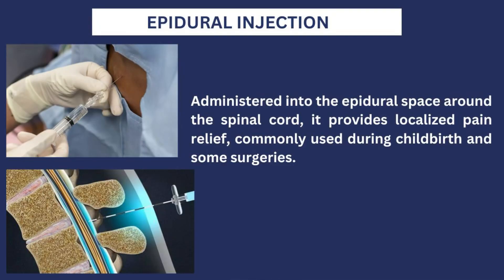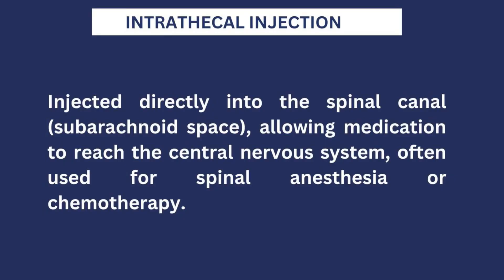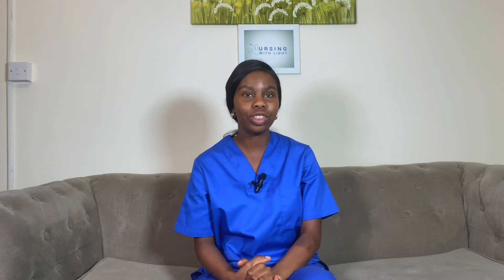The next one is the epidural, which is commonly used in maternity as well as surgical procedures. The epidural injection is administered into the epidural space around the spinal cord and helps to provide localized pain relief during childbirth and surgeries. Next is the intrathecal injection, which is given directly into the spinal canal — the subarachnoid space — allowing a healthcare professional to distribute medication into the central nervous system. It is usually used for spinal anesthesia or in cases of chemotherapy. After that is the intraarticular injection, delivered directly into a joint such as the knee or shoulder, providing targeted pain relief for joint pain, inflammation, or arthritis.